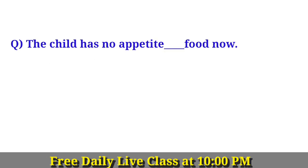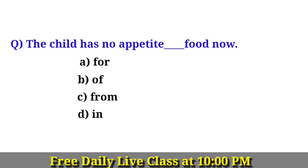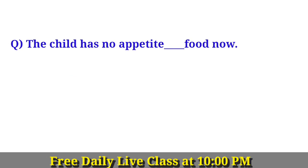The child has no appetite for now. The next option is C — had an ambition for. The right answer is option C, which is the appropriate preposition.